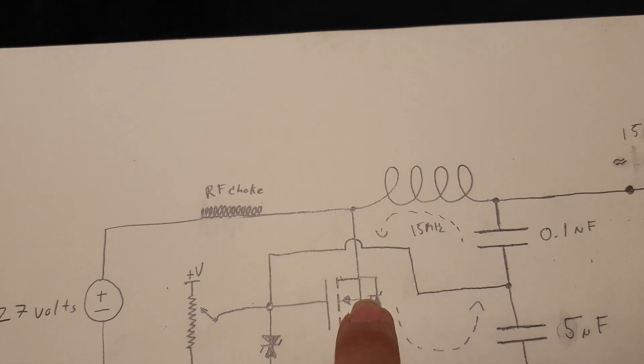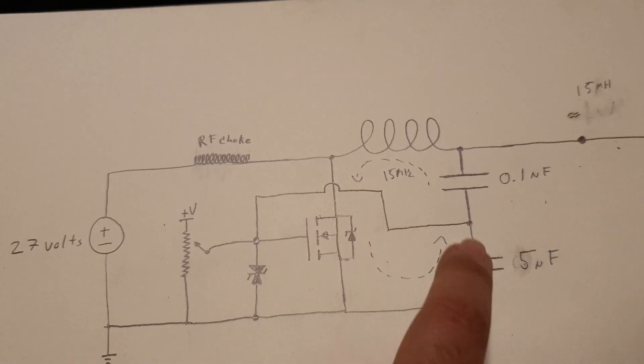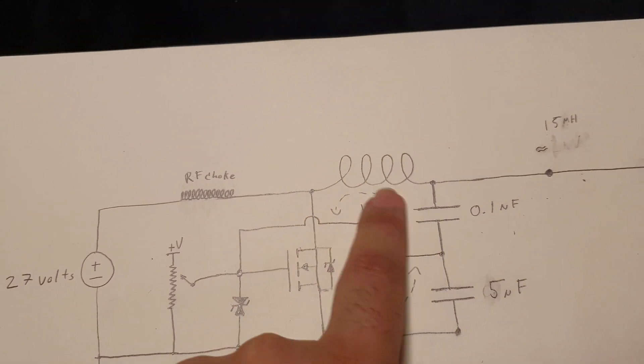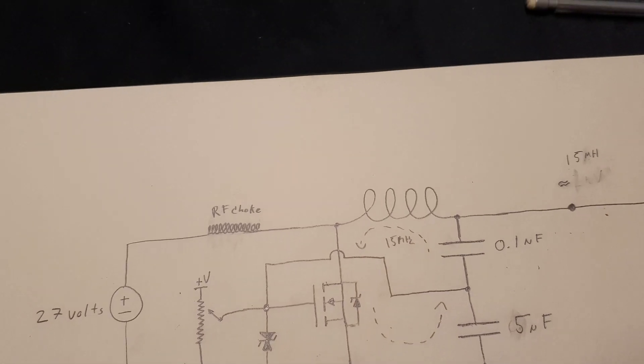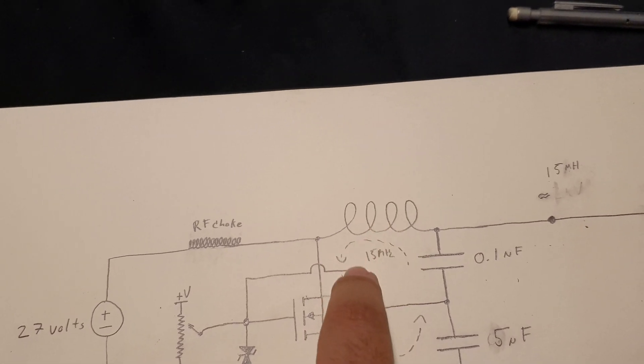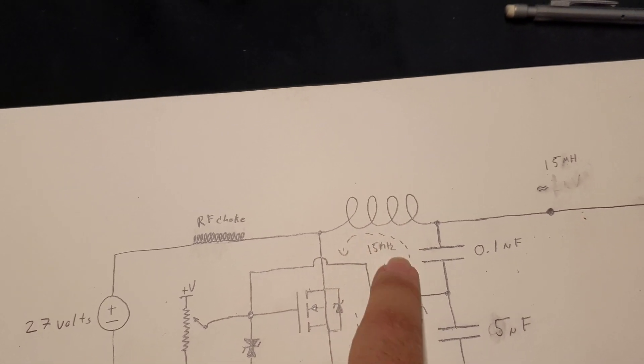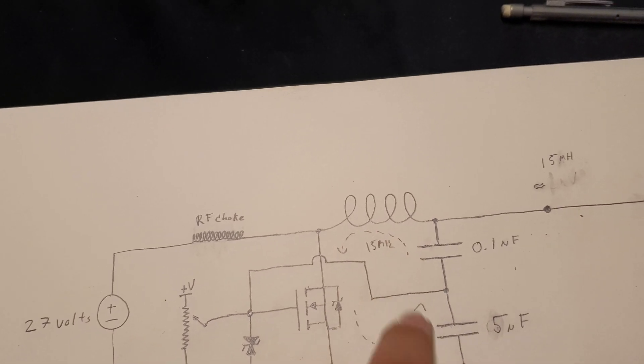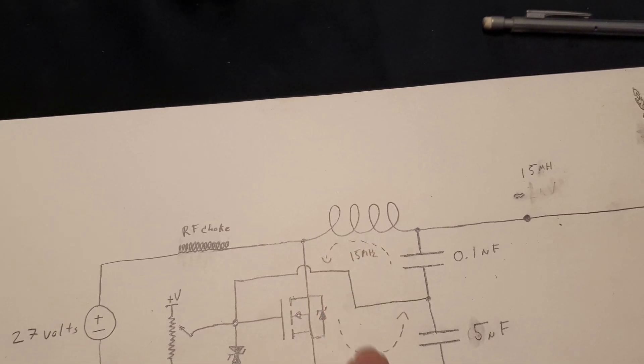The power transistor is going to be pulsing this LC circuit, and the 15 megahertz electrical currents are going to be oscillating in this LC circuit.